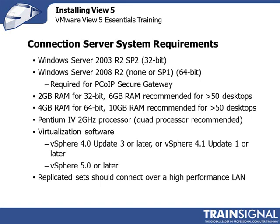If you're going to have multiple View Manager servers — that is a standard server and additional replica servers — those replicated sets need to be connected together over a high-speed network like a LAN, not a high-latency network like a WAN. So if you're grouping your replica and standard servers together, you really don't want to be spreading them across low-speed WAN links.